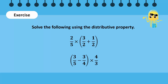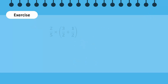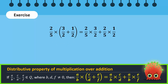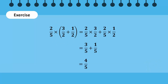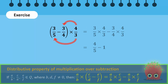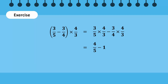Study these expressions. Take a minute to solve them using the distributive property. Now let us solve the problem. According to the distributive property, we will distribute 2 over 5 to 3 over 2 and 1 over 2, which results in this expression. In this expression, we will distribute 4 over 3 to 3 over 5 and 3 over 4 respectively. This results in the expression 4 over 5 minus 1, which gives us the answer minus 1 over 5.